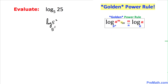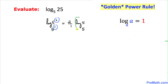The golden power rule states that when we have exponents m and n for argument and base respectively, we move them to the front as the fraction m over n. Our exponents are 2 and 1, so we get 2 over 1 times log of 5 with base 5. Since those are the same, log of 5 with base 5 equals 1, and 2 over 1 is simply 2, so our answer is 2.